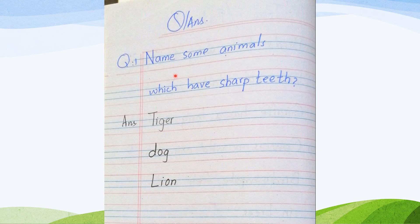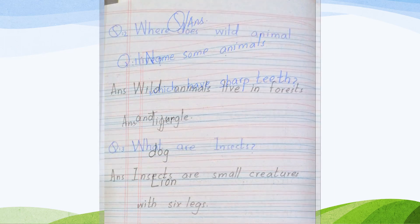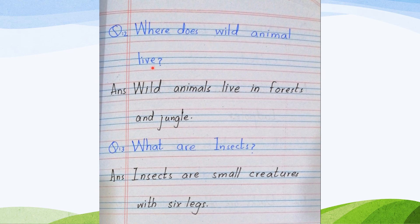Question number 1: Where do wild animals live? Wild animals like tiger, dog, and lion live in forests and jungles. Question: What are insects? Insects are small creatures with six legs.